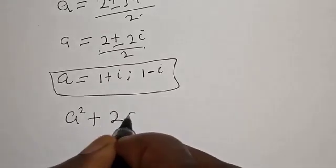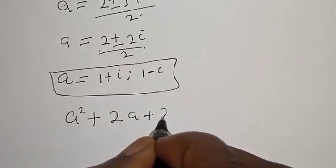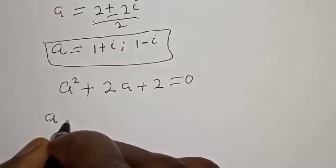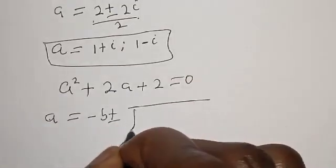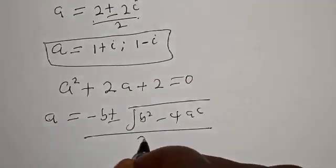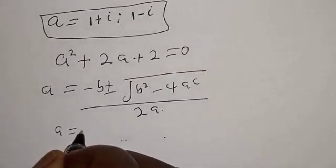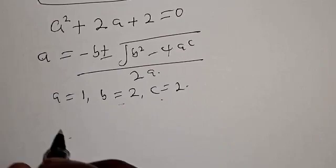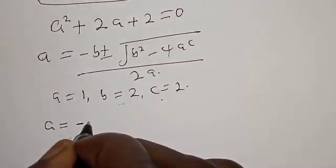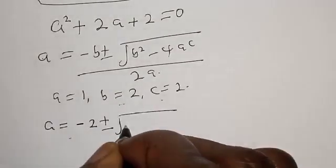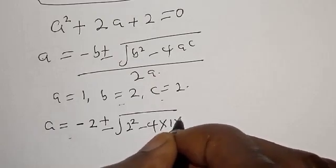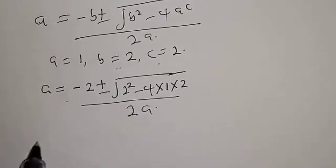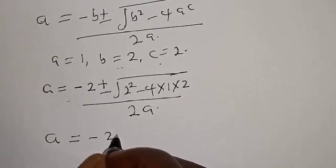Also for the second case, the equation is a squared plus 2a plus 2 is equal to 0. We can also solve using the quadratic general formula. We have a equal to 1, b equal to 2, and c equal to 2. Therefore we have a is equal to minus 2 plus or minus square root of 2 squared minus 4 multiplied by 1 multiplied by 2, over 2a.